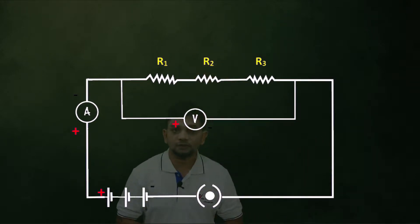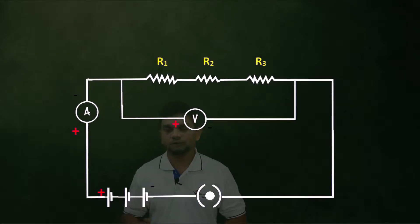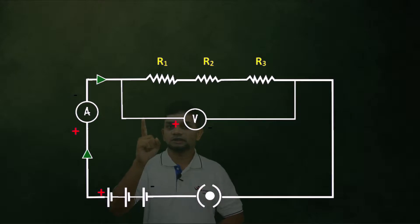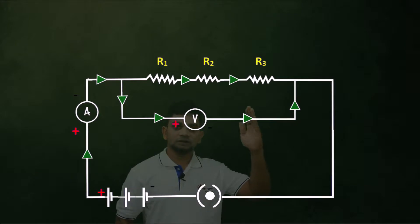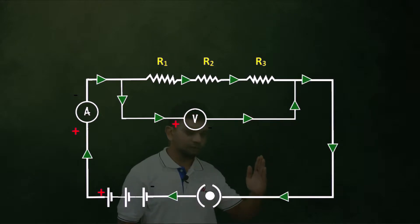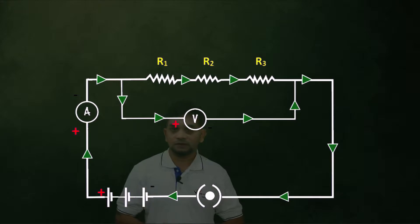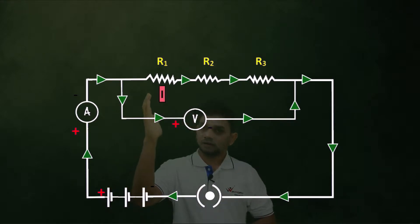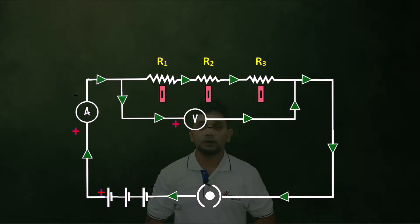Can you guess the direction of current flow? Current flow always starts from the positive terminal of the battery and flows towards the negative terminal. In series connection, the current through each resistor will be the same. If the total current is I, then the current through R1, R2, and R3 is each I.